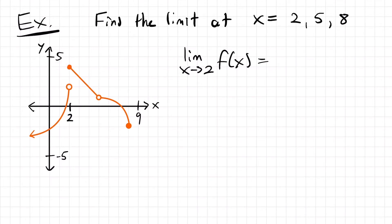A limit is the value of y we're getting near as we approach our x value of interest. So from the right side it is 4. But if we look from the left side, we're going to be approaching y equals 2. From the right side we have 4, and from the left side we have 2, and those don't match up. So we have to say that the limit as x approaches 2 from both sides does not exist.